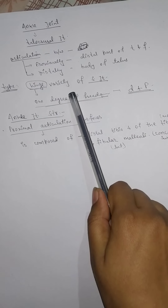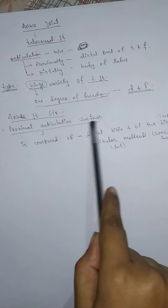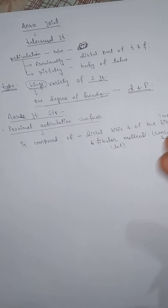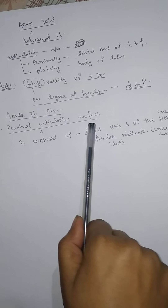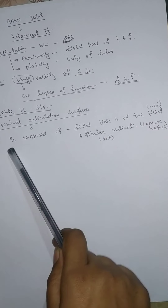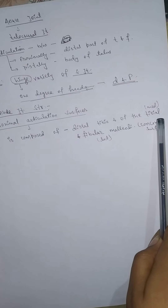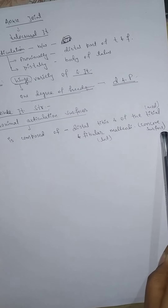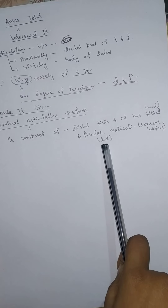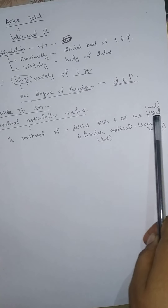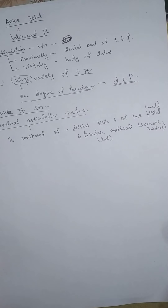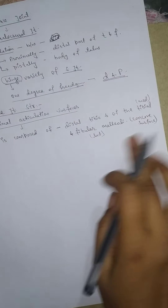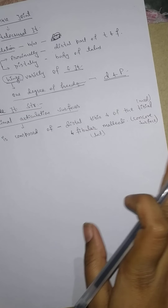In the ankle joint structure, we are first going to discuss about the proximal articulation surface and then the distal articulation surface. The proximal articulation surface is composed of the distal tibia and the tibial and fibular malleoli, which form the concave surface. The fibular malleolus is present at the lateral side and the tibial malleolus is present at the medial side.